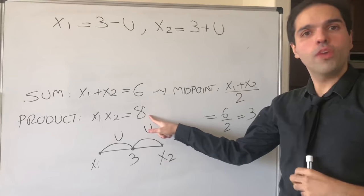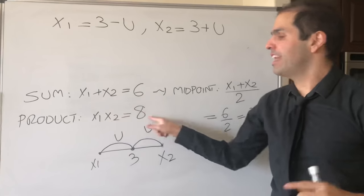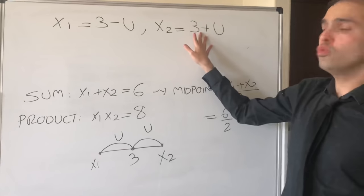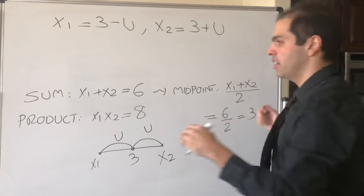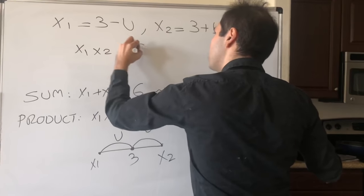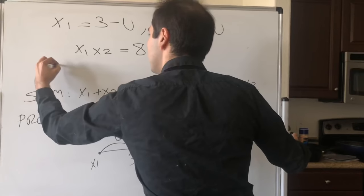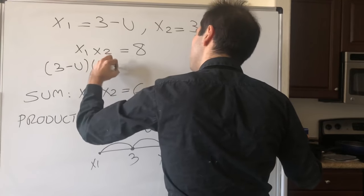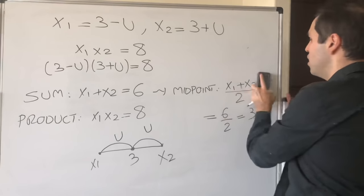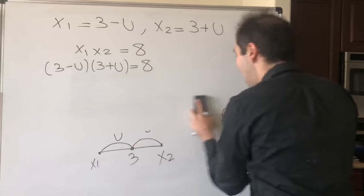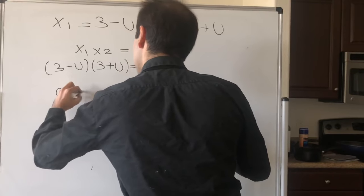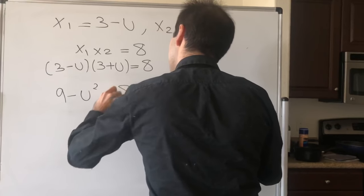And there's one more info we haven't used yet, namely that x₁x₂ = 8. So let's use those two new formulas to plug it into this product. So x₁x₂ = 8, that gives you (3 - u)(3 + u) = 8.